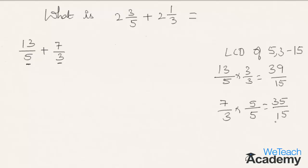Now substituting the equivalent fractions, we get 39/15 plus 35/15. So now the denominator is the same. We write the denominator in the result as 15 and add up the numerators, that is 39 plus 35.